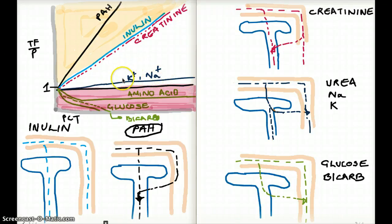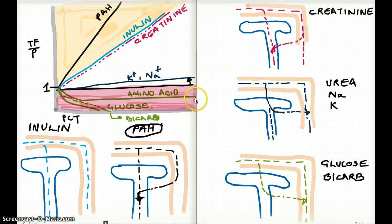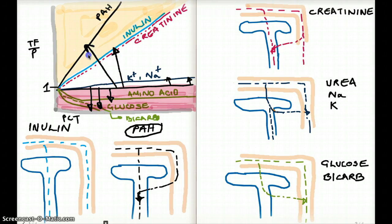You are not going to see huge changes in sodium and potassium unless there is pathology, because most is reabsorbed but some is filtered and excreted with the urine. Amino acid is going to be less than one — we do not even see it in the GFR. Glucose: less than one. Bicarb: less than one. Potassium and sodium: a little greater than one. Creatinine and inulin: a lot greater than one. And PAH is going to be the greatest of all.